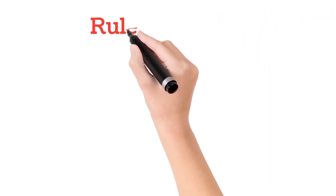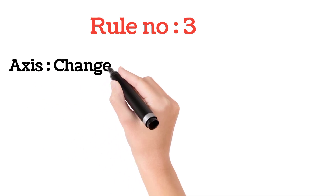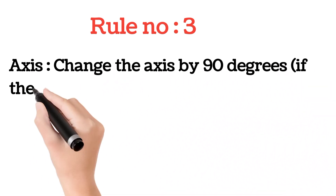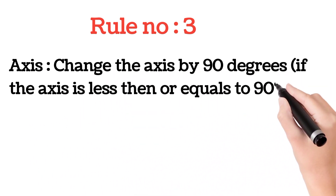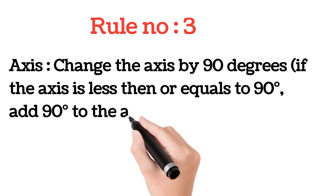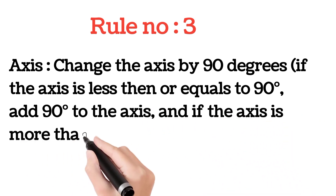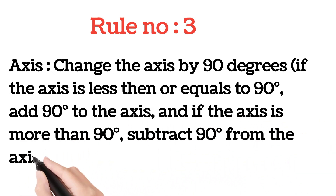Rule number three: change the axis by 90 degrees. If the axis is less than 90, add 90. If the axis is more than 90, subtract 90.